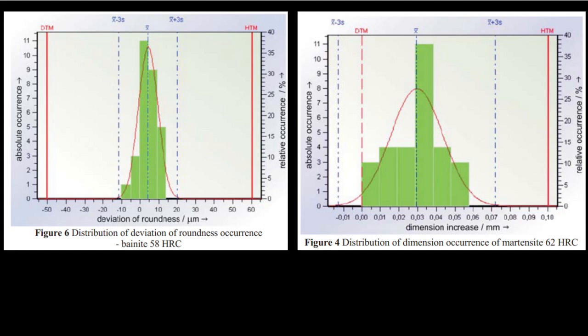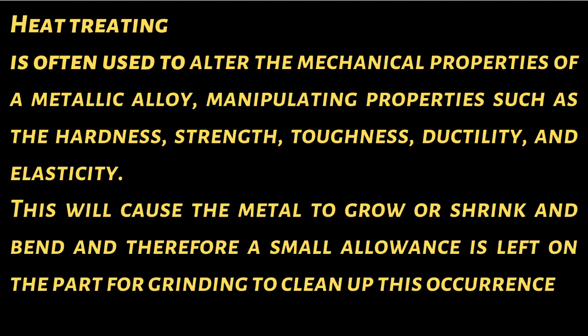I can show you all sorts of charts that'll tell you exactly how much a part's going to bend and warp and elongate, but the reality is most of the time we just leave a small amount on depending on the type of material, just to accommodate the bending, the warping, and the twisting.